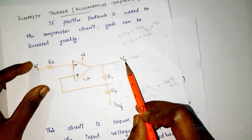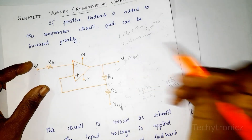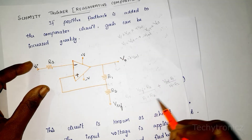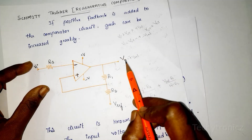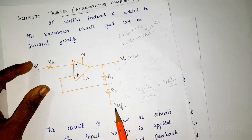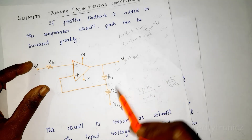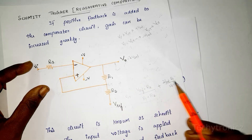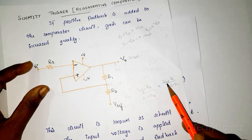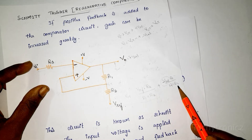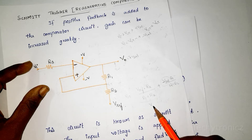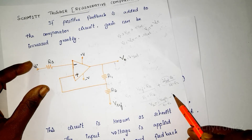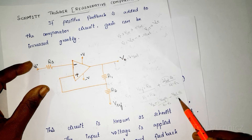Next, when V0 is equal to minus V saturation, we again use superposition theorem. From the reference voltage source we get V_ref × R2/(R1+R2), and from minus V saturation we get minus V_sat × R1/(R1+R2). Therefore: VLT = V_ref × R2/(R1+R2) − V_sat × R1/(R1+R2). These are the upper threshold voltage and lower threshold voltage values.